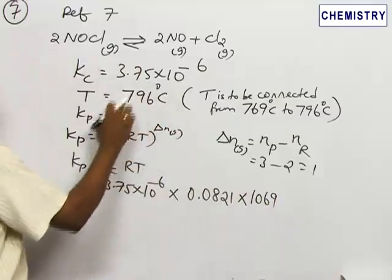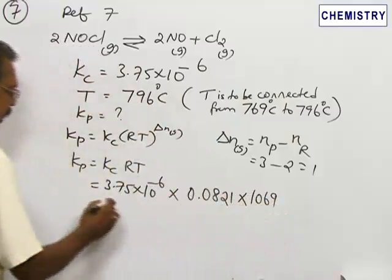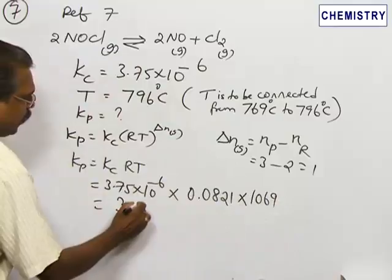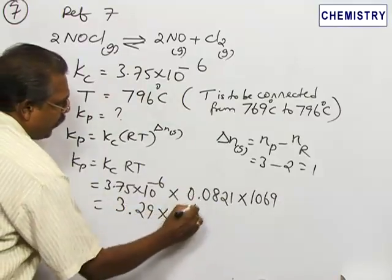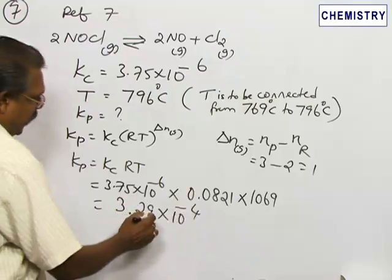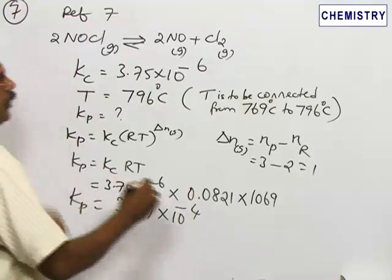So 273 should be added to this, and on solving we have the answer 3.29 × 10⁻⁴. So 3.29 × 10⁻⁴ is the KP value.